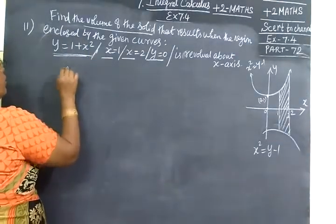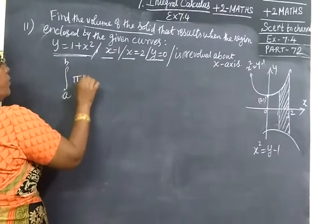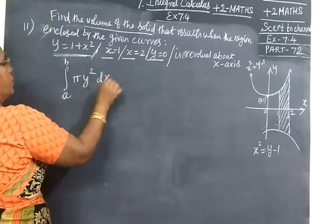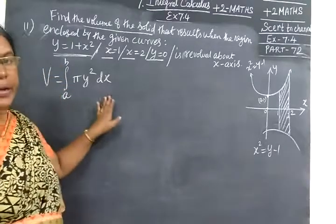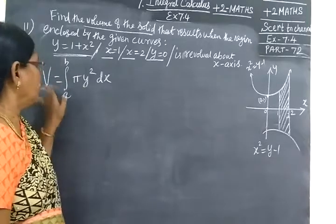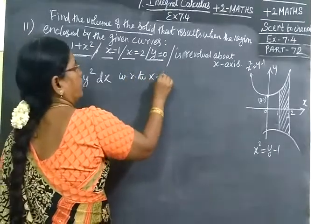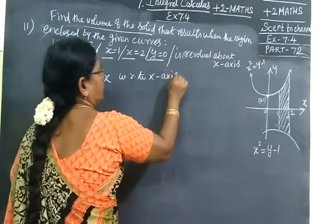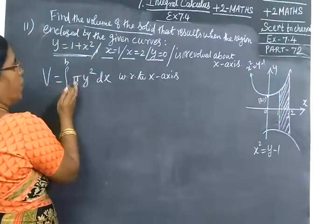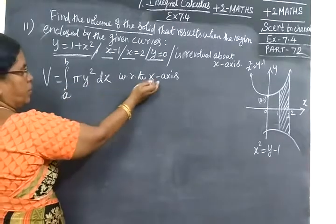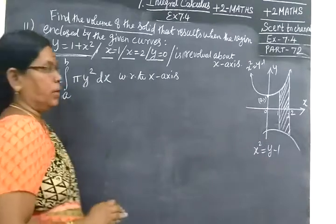The formula is integral from a to b of πy² dx. Area is ydx or xdy. Volume with respect to x-axis is πy² dx. With respect to y-axis, volume is πx² dy.